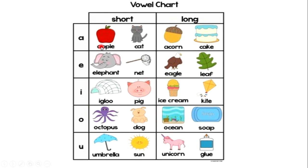Apple, cat, elephant, nut, igloo, pig, octopus, dog, umbrella, sun. Now the long vowels: A — acorn, cake. E — eagle, leaf.